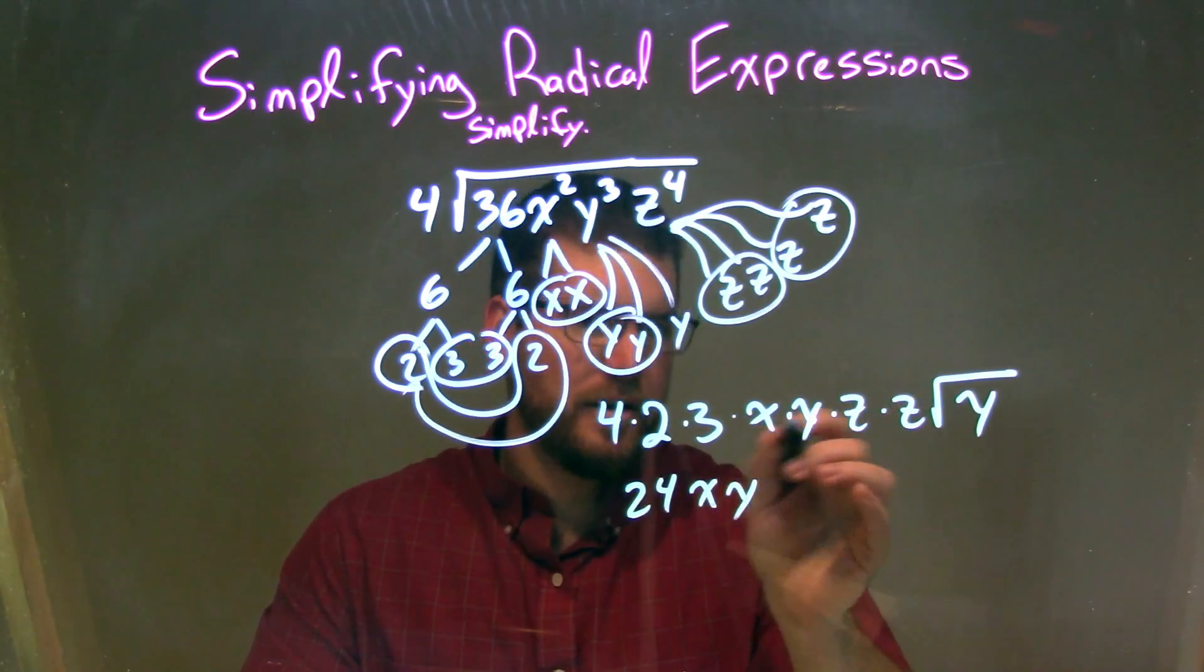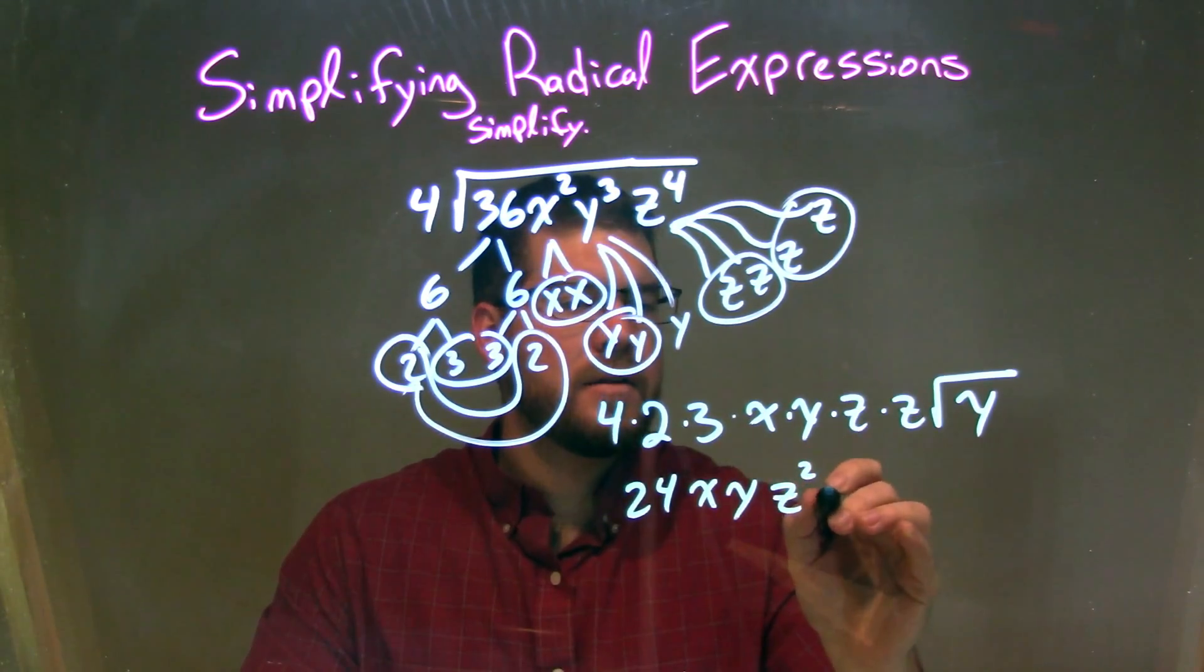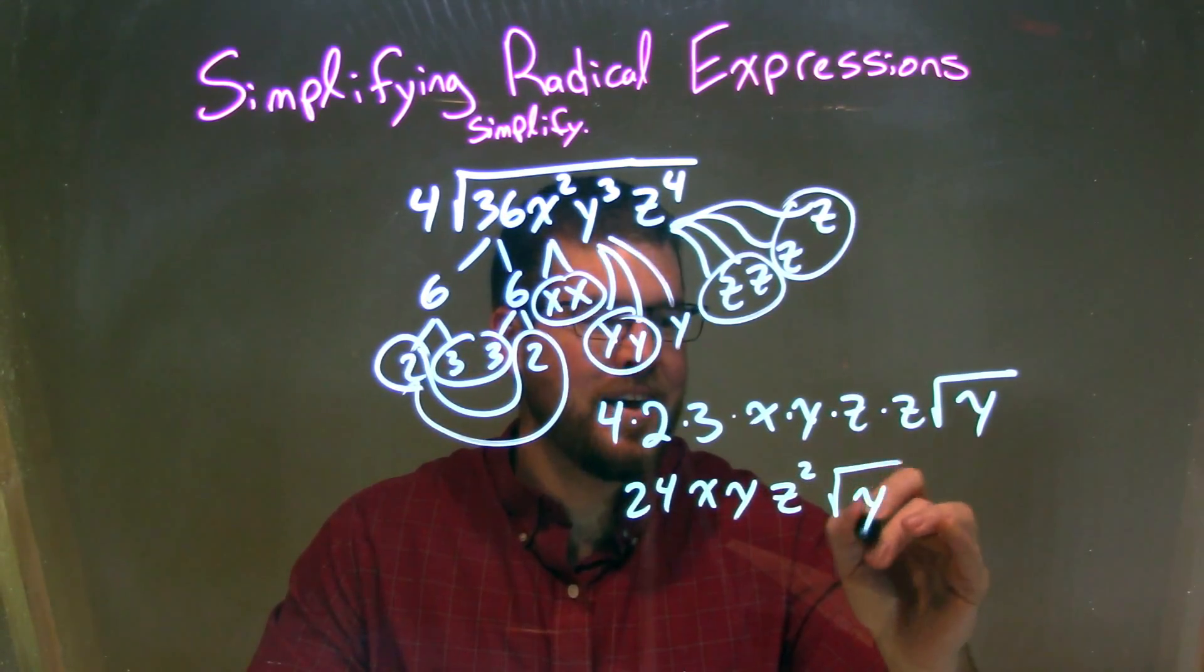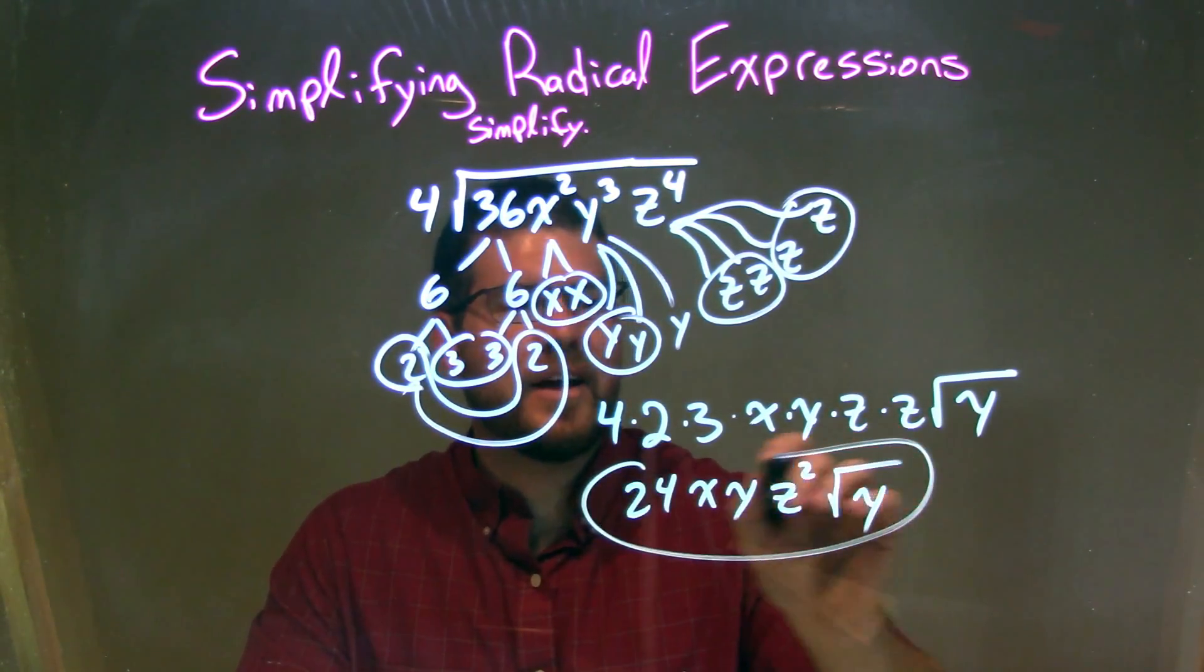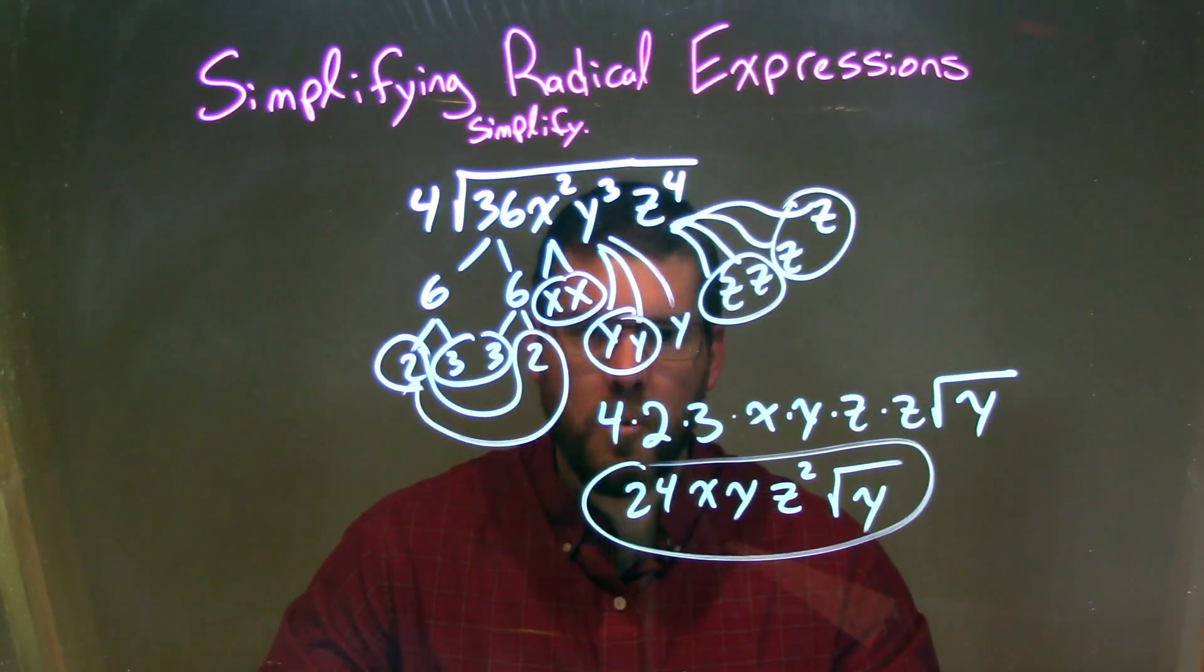x, y, just singles there. z times z is z squared, so we're going to put a z squared there. Times the square root of what's inside, it's just a y. And so my final answer here is 24xyz squared times the square root of y.